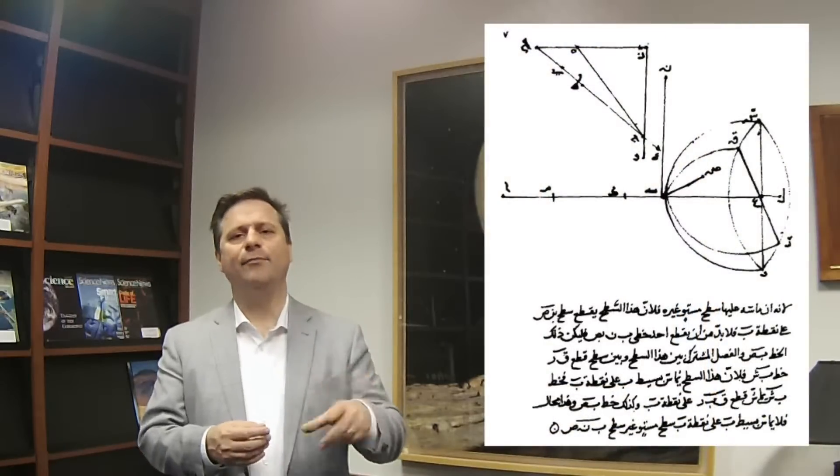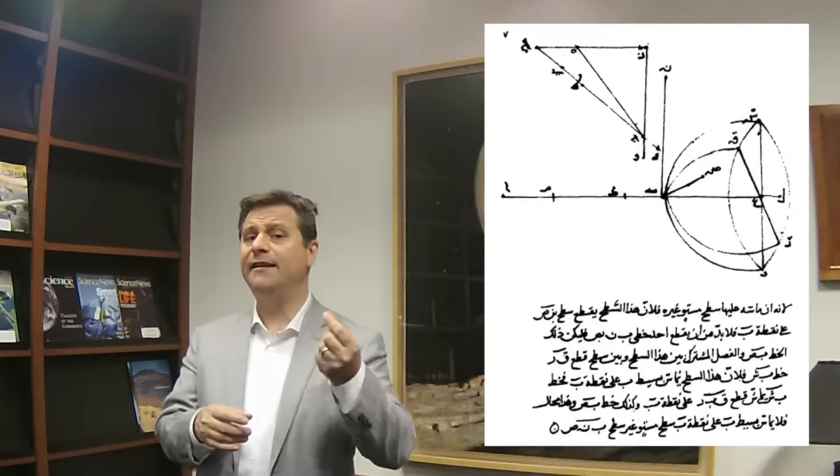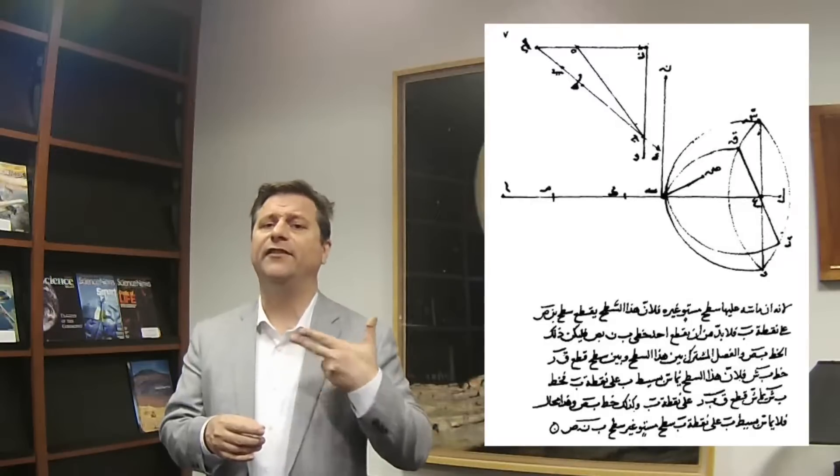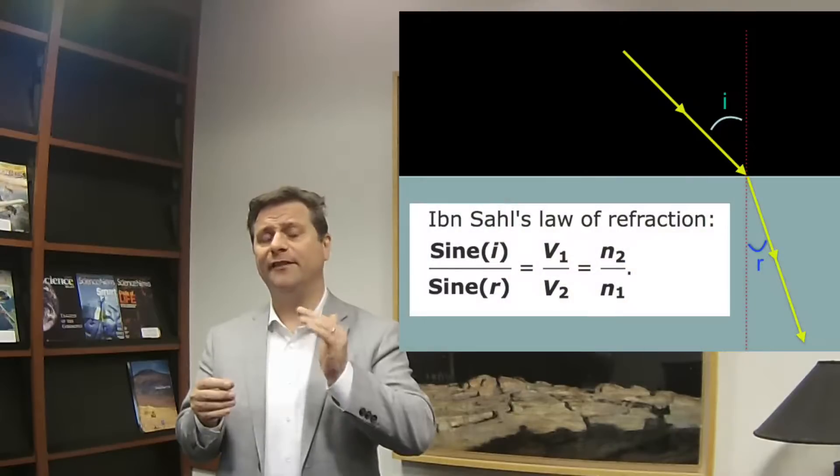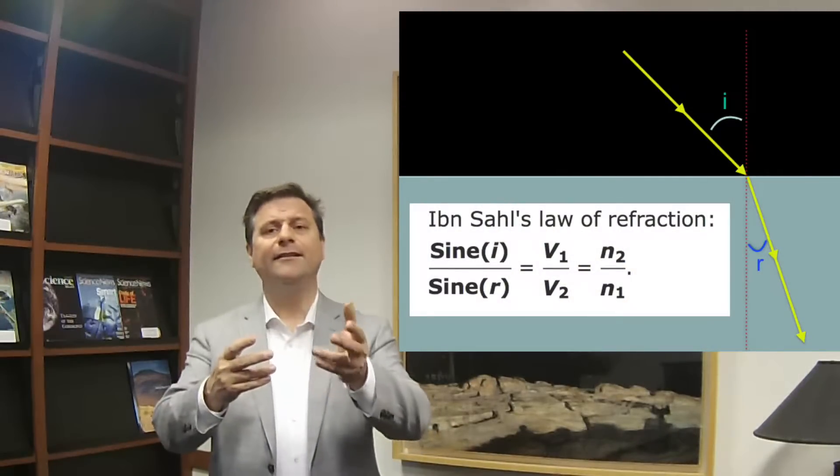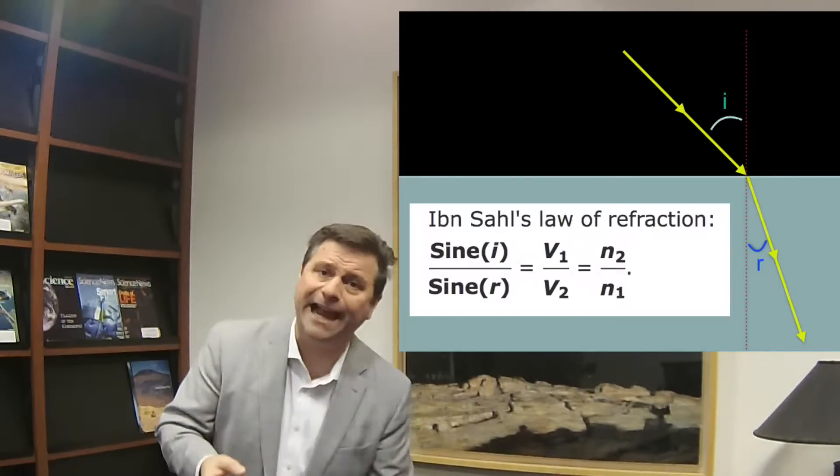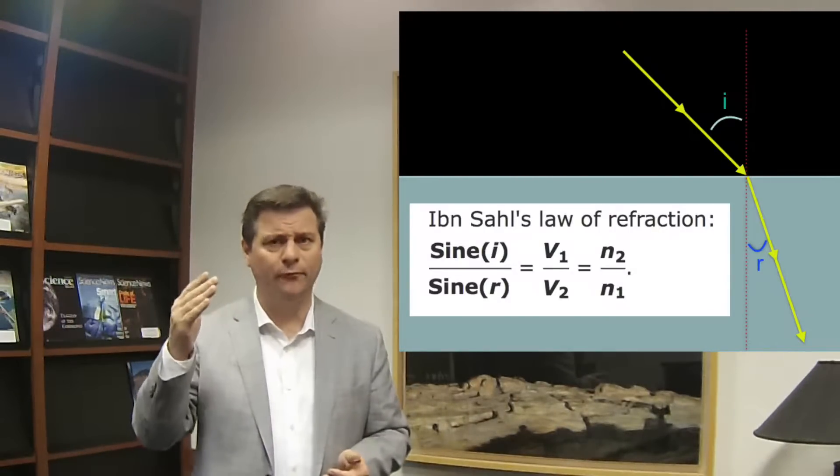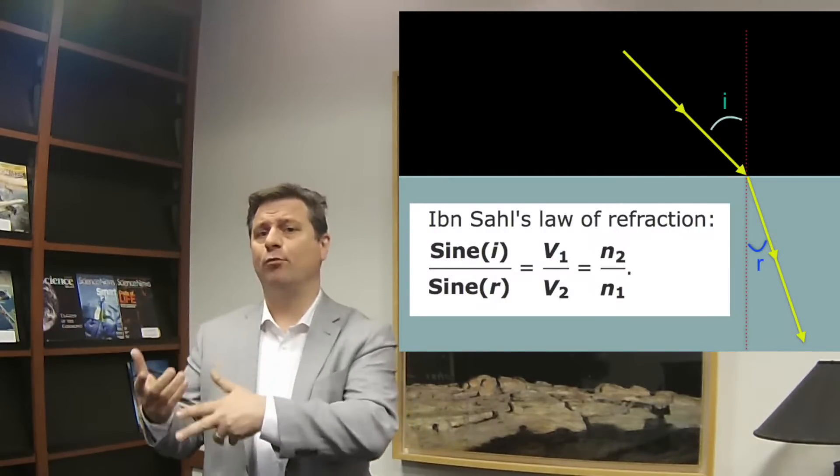Then almost 800 years later, the Iraqi philosopher named Ibn Saul in about 984 AD actually determined that the sine of the angle of incidence divided by the sine of the angle of refraction is equal to the speed of the wave - the speed of light in one medium to the other medium - and then to the reciprocal of the index of refraction of the one medium to the other. That's what he learned - the proportionality had to be proportional to the speeds of the light.